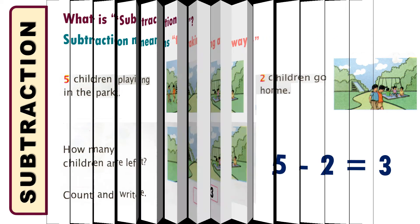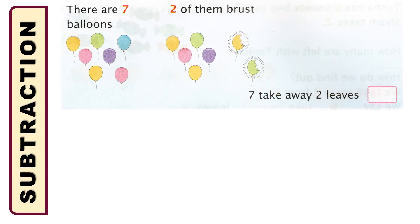Let's do some more practice. Here we have seven balloons. Among them, two were burst. Let's count how many were left. The remaining balloons are one, two, three, four, five — five balloons were left after bursting two. So it means that seven take away two leaves five. Among the seven balloons, two were burst and five were left.